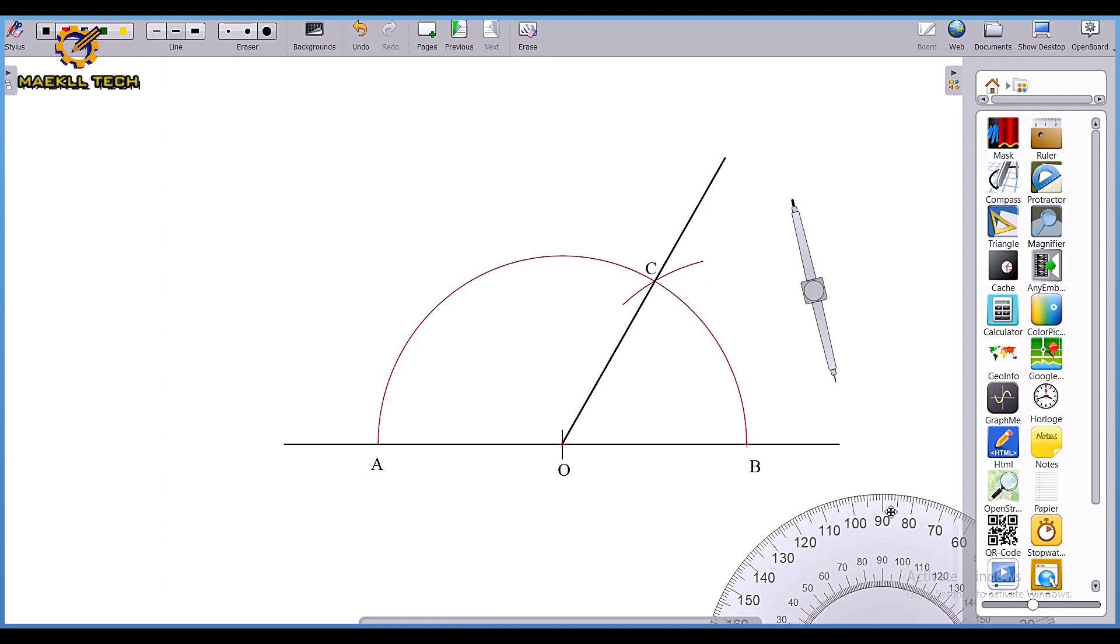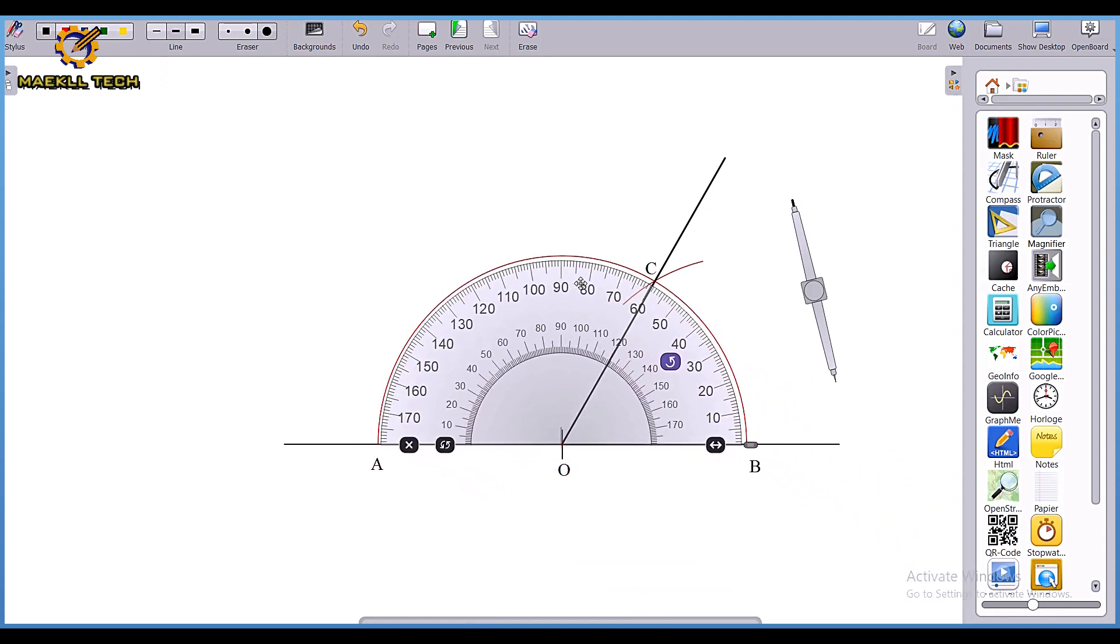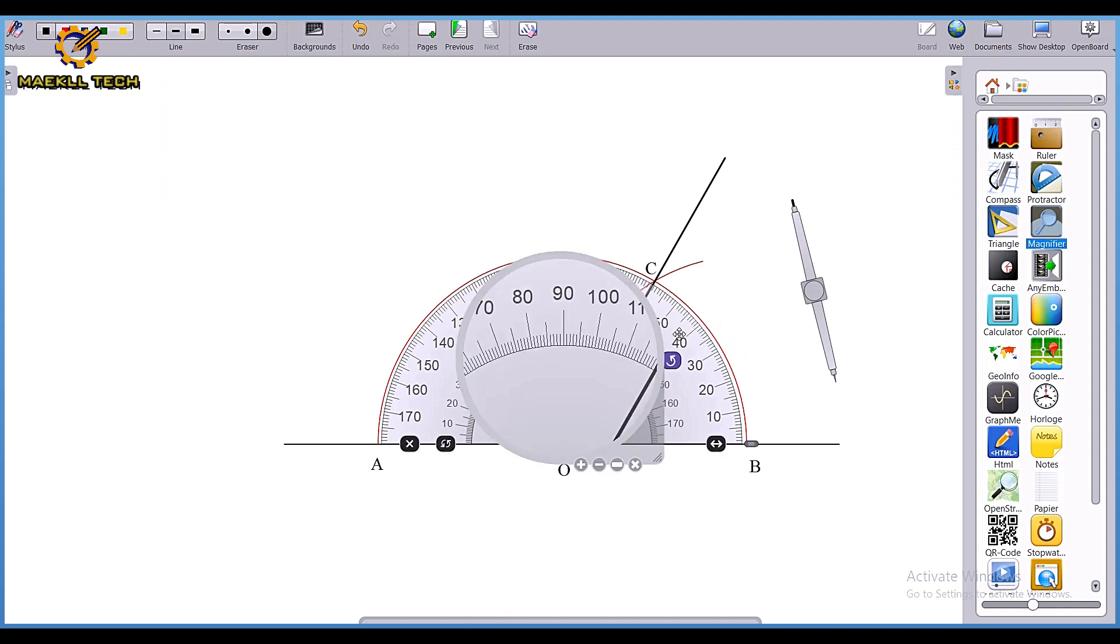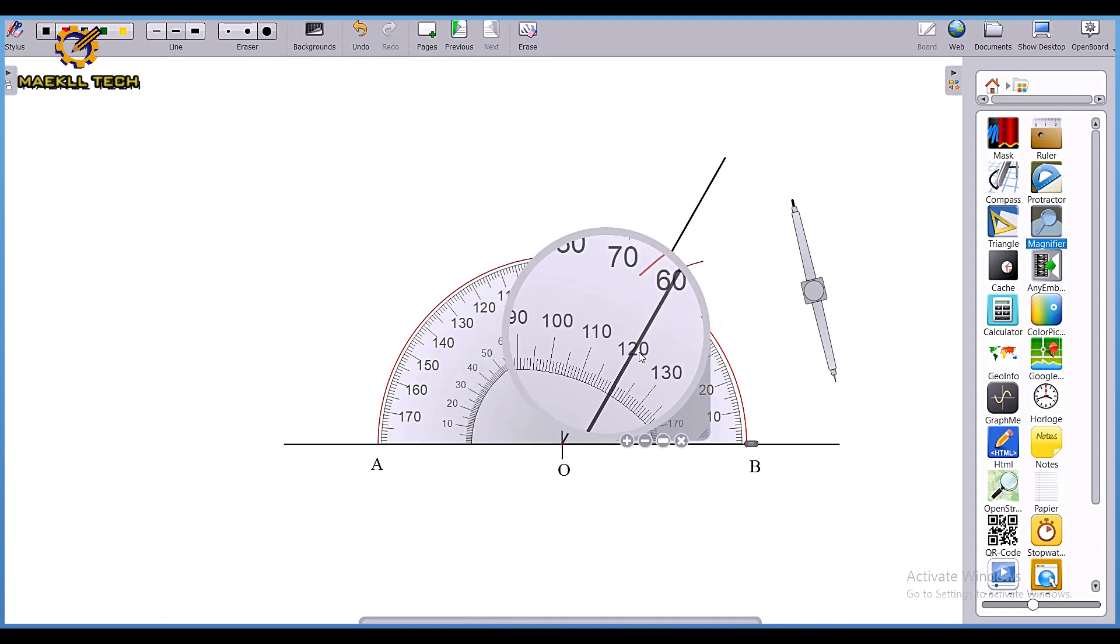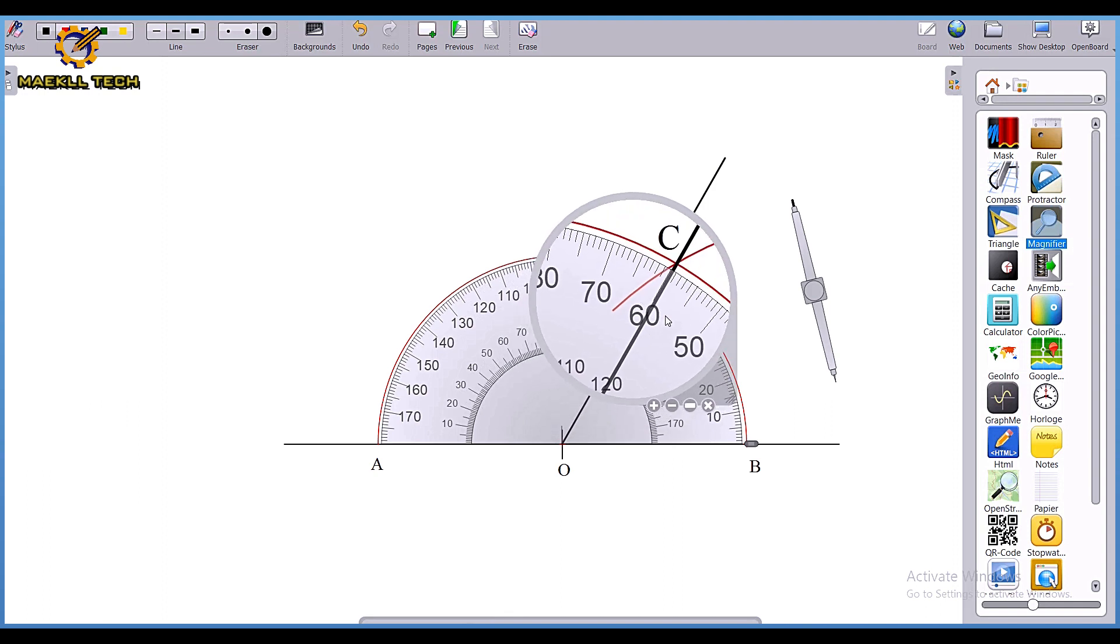Let's check whether what I'm saying is correct with my protractor. You can see that that line is falling towards 120 and 60.